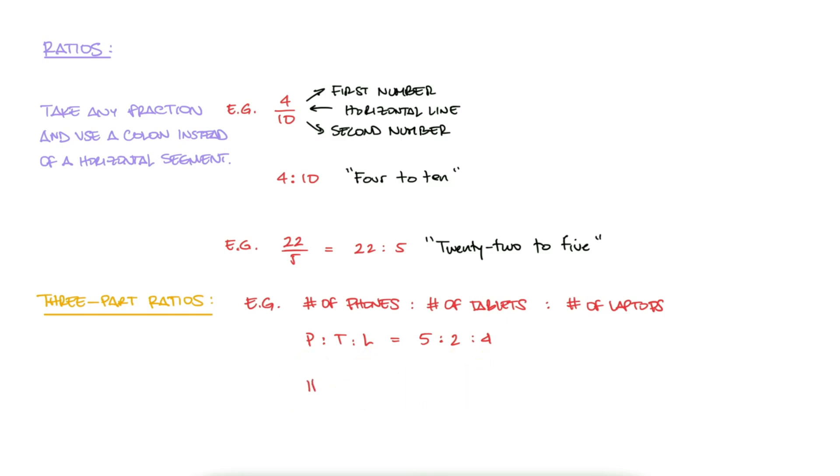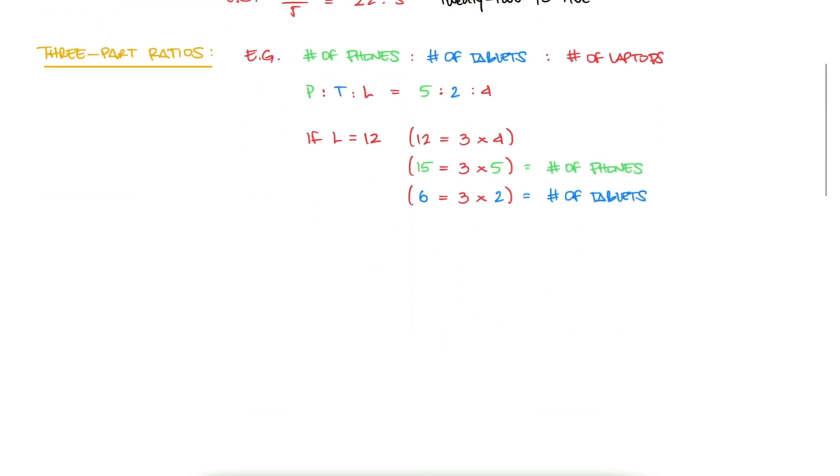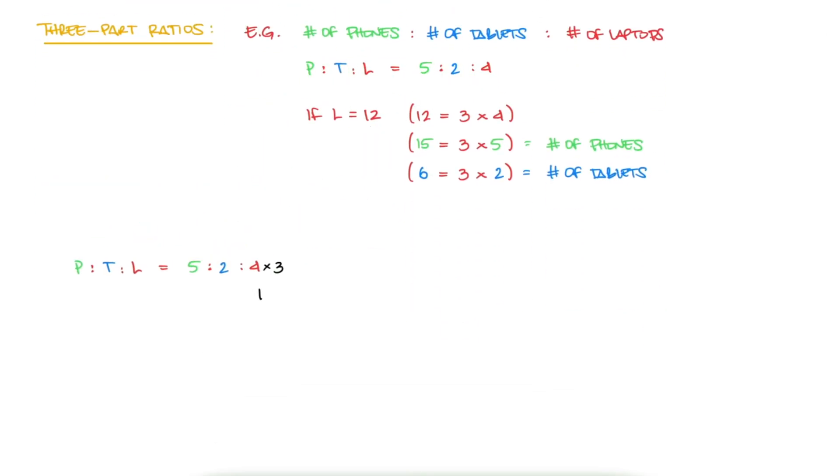If you knew, for example, that there are 12 laptops in this classroom, and since 12 is 3 times the given ratio value, we multiply all ratio parts by 3 to find the actual number of phones and tablets, 15 and 6. Just like a fraction, if you multiply one part by a number, the other parts need to be multiplied by the same number to keep the same fraction.